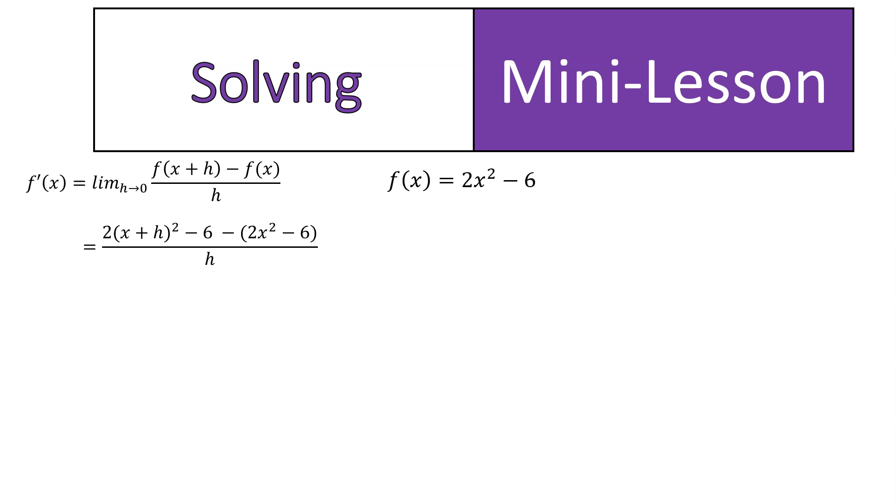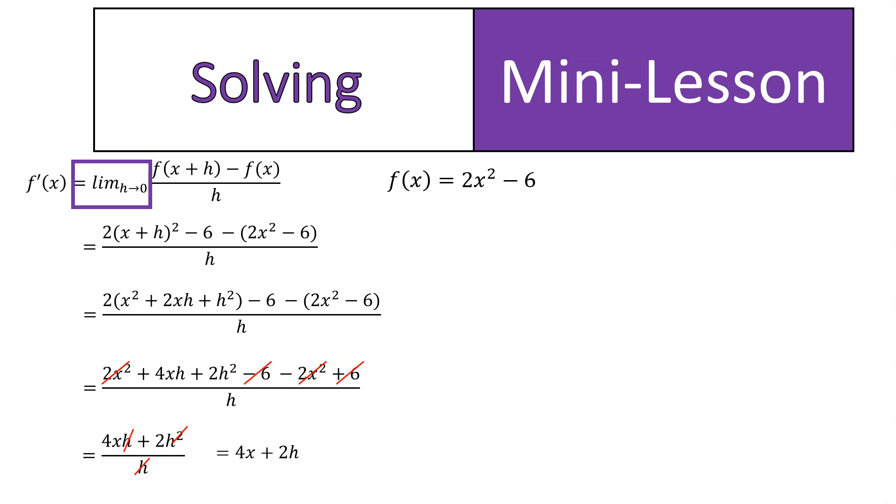When you solve it, you would substitute in the function, and then you would use some algebra to expand our binomial, simplify, get rid of common terms, and simplify out an h down to this point. Then you'd have to remember that what we're looking at is the limit as h approaches zero, so we would substitute zero into there after we get it out of the denominator. And then that leaves us with the answer of 4x. Super complicated.